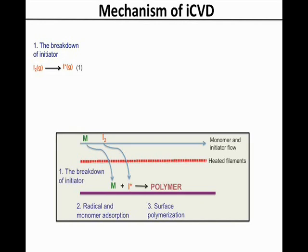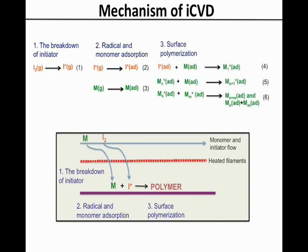The reaction mechanism proposed for iCVD polymerisation can be divided into three main steps. The first is the thermal decomposition of the initiator in the vapour phase in the vicinity of the heated filaments to form primary radicals. In the second step, primary radicals diffuse to the surface and become adsorbed. The monomer is also adsorbed from the vapour phase onto the surface. Finally, in the third step, polymerisation is initiated at the surface by the attack of a primary radical on a monomer molecule.